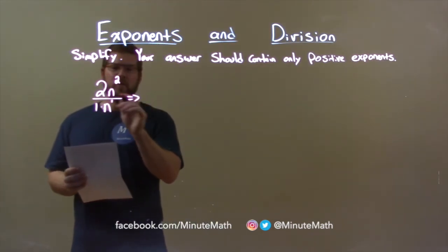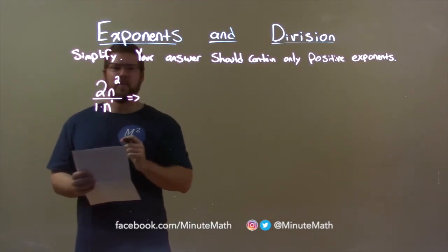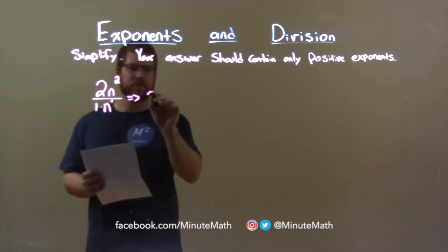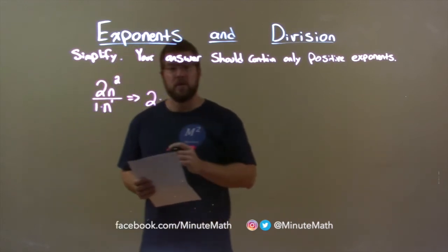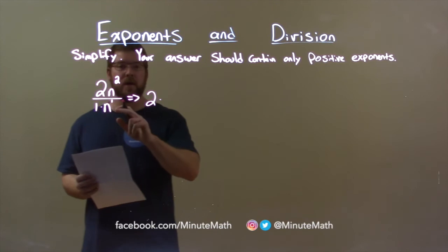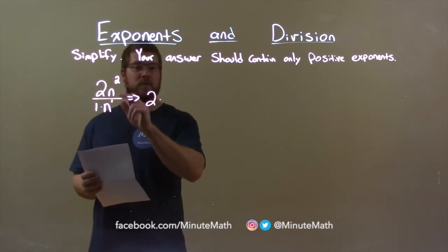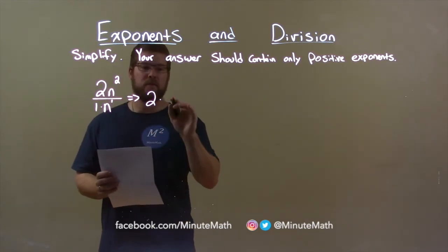Well, as we keep going, look at the coefficients, and 2 divided by 1 is still 2. Now, let's look at the variables. We have the same base. When we have the same base and we're dividing it, we subtract the exponents.